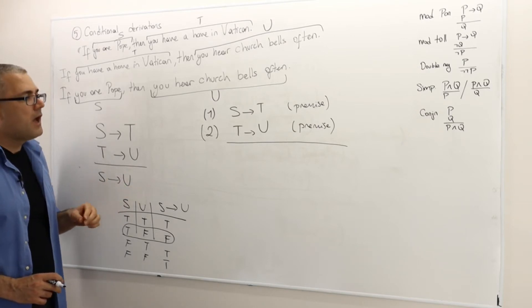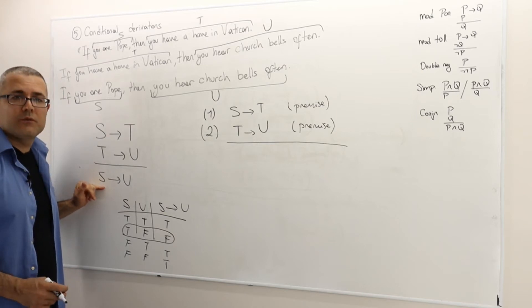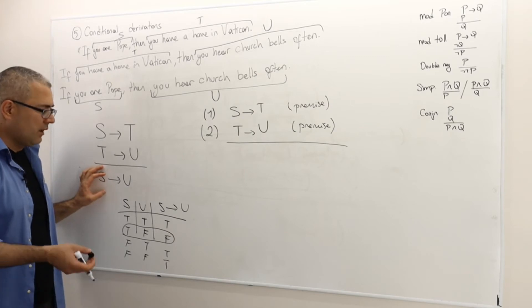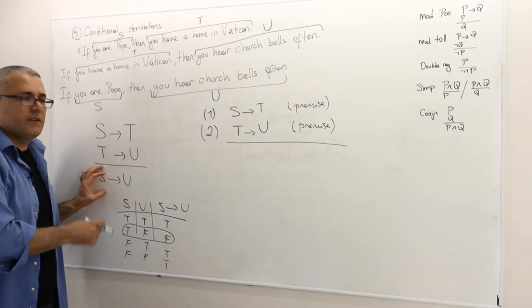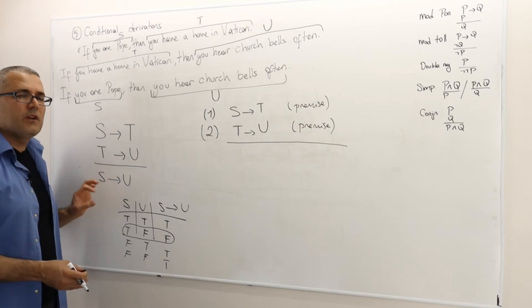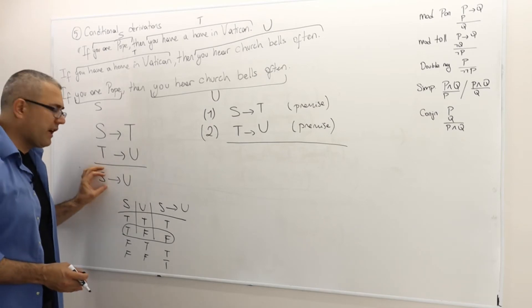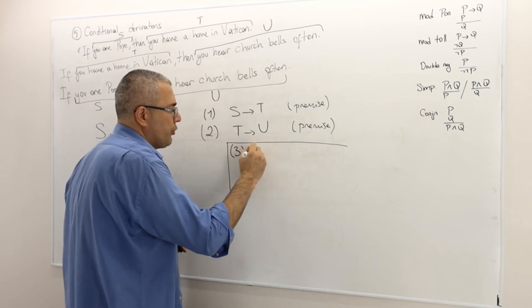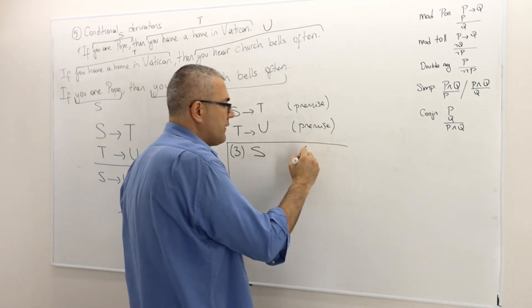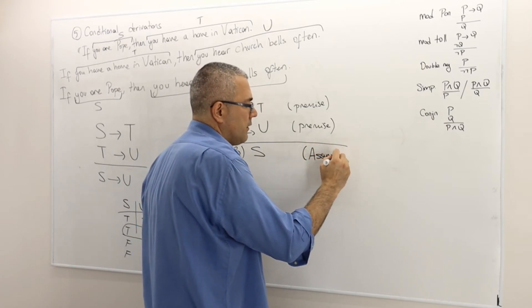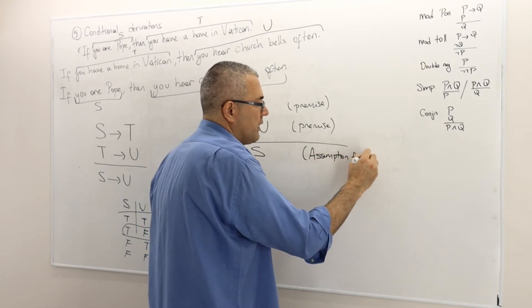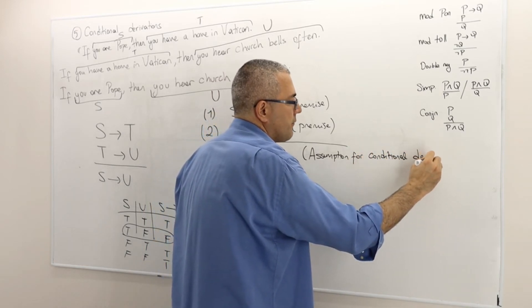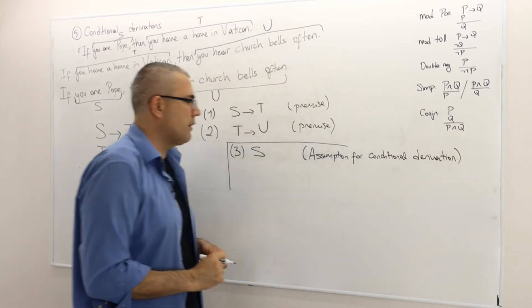What about if S is true? Well if S is true, then there's only one way that this conditional sentence is true which is U must be true as well. So therefore I'm going to ignore the case where S is false because when S is false, whether U is true or not this implication is going to be true anyway. So I will only look at the case where S is true. So suppose S is true. We call this assumption condition for conditional derivation.